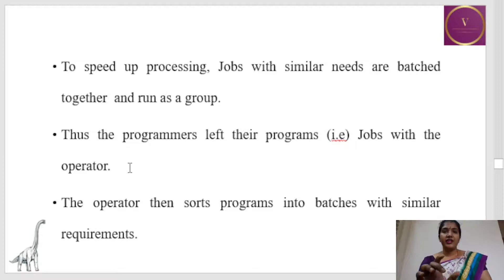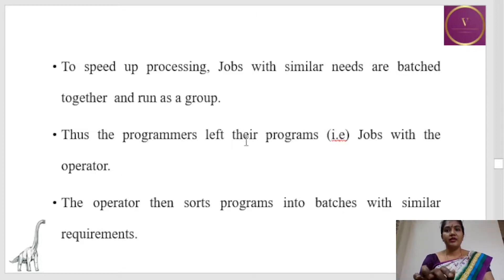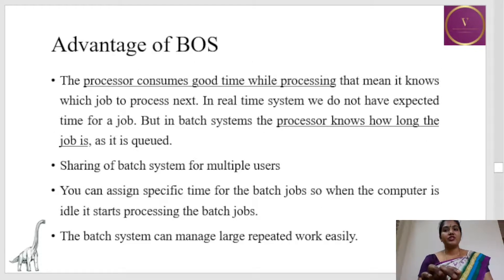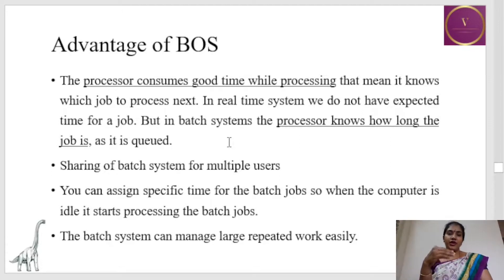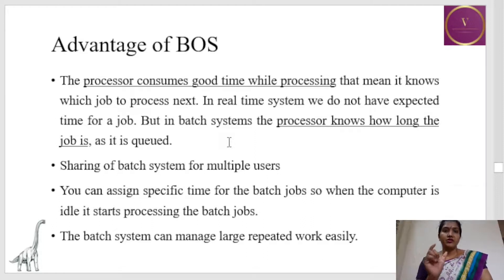The main reason to create a batch is to collect similar jobs and speed up their processing. The programmer leaves the job with the operator, and the operator sorts programs into batches with similar requirements. Advantage: the processor consumes time productively while jobs are being processed. It knows how much time to spend for a particular batch. Different jobs are collected into batches and queued so the processor is always used and processor time is not wasted unnecessarily.